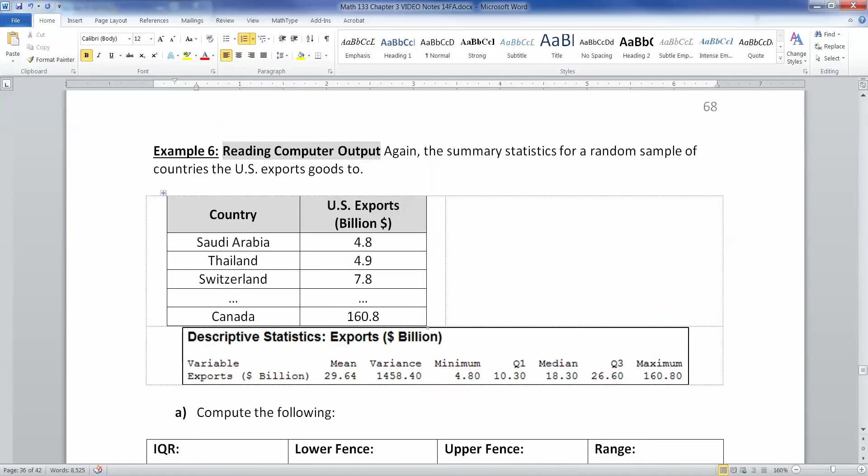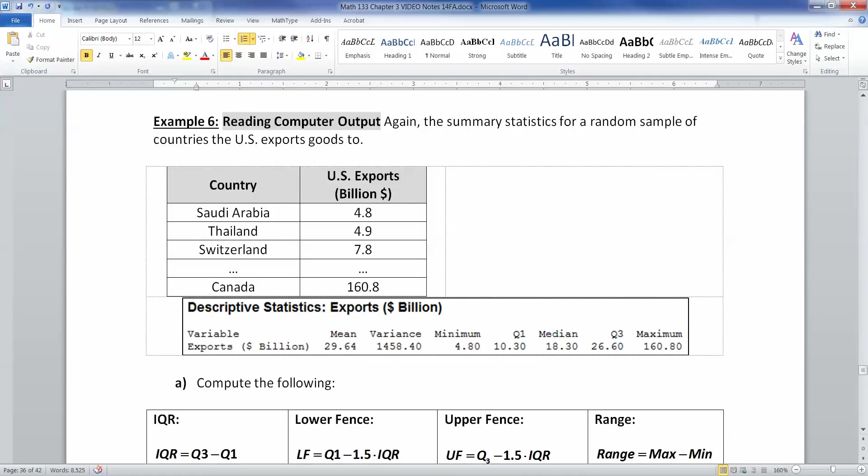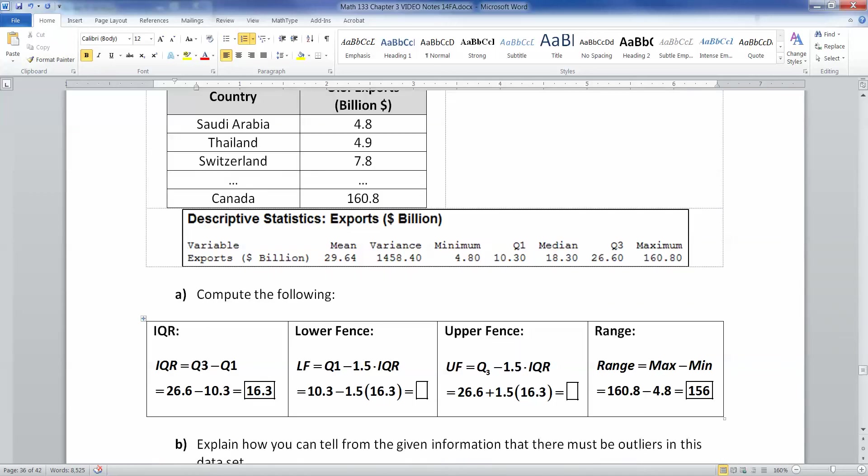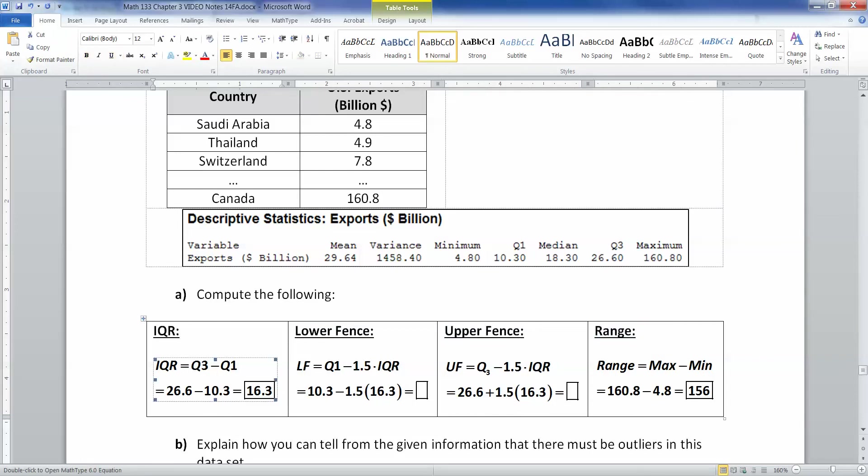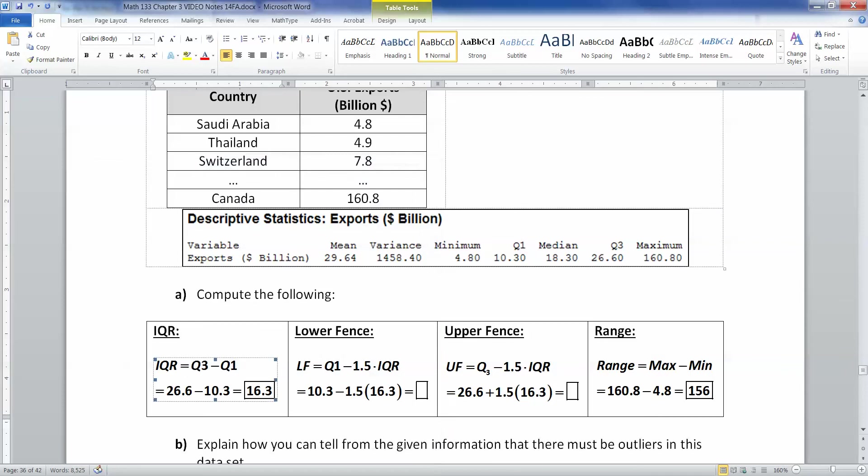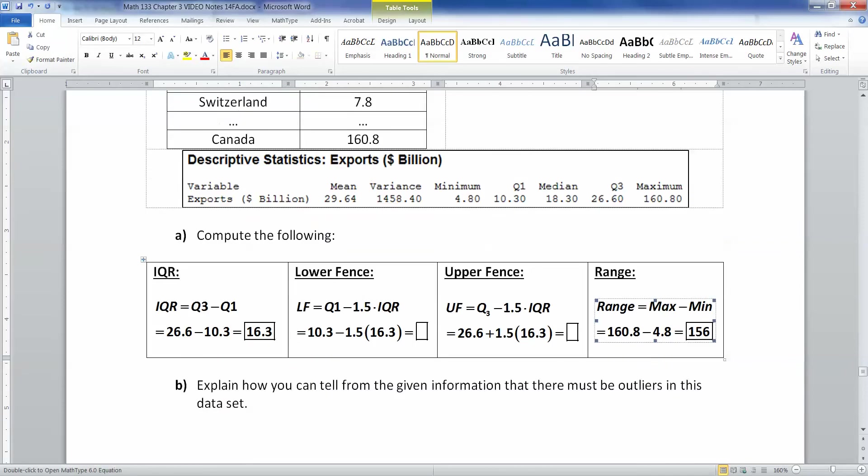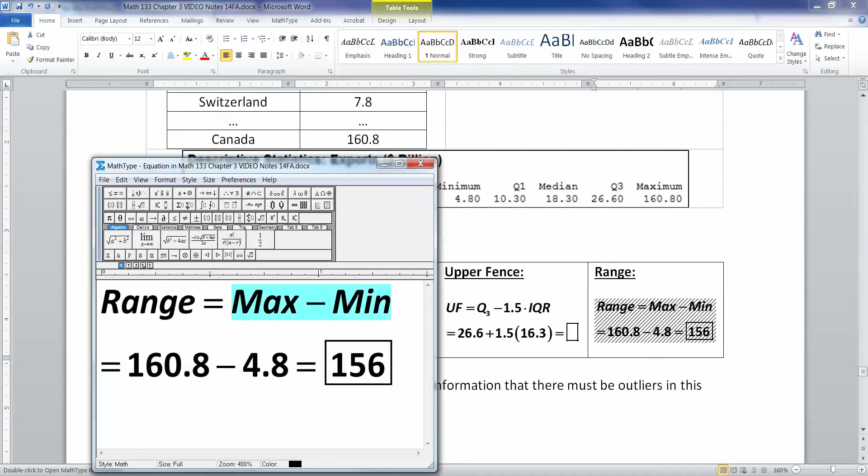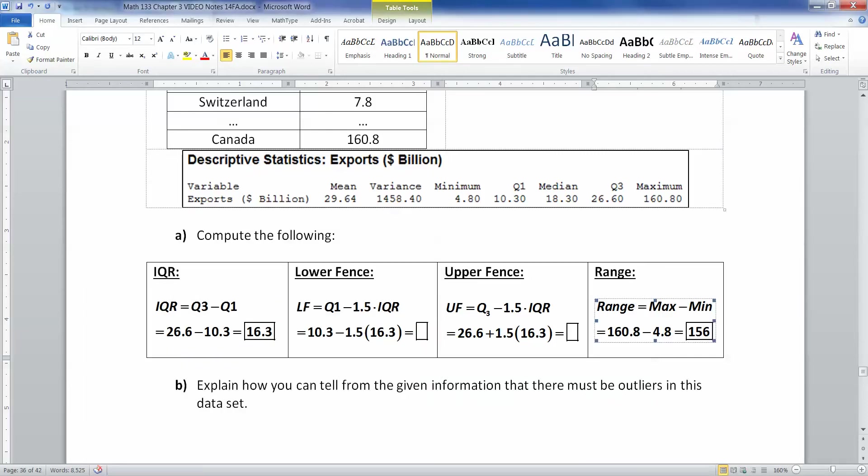All right. Let's do this last problem together, and then we'll be done with this section. So again, we have the U.S. exports to different countries, and we don't actually see all the countries. And this time, we have a mini-tab output, slightly different computer program to give us this output. So we're supposed to compute the following, the IQR, the lower fence, the upper fence, and the range. Okay. So the IQR is Q3 minus Q1. And you can see right here, Q3 is 26.6. Q1 is 10.3. Take 26.6 minus 10.3, and you get 16.3. And while we're on the subject, let's do the range over here because that's pretty easy. That's the max minus the min, which is 160.8, take away 4.8, which is 156. I think we found that already in an earlier video, but that's okay.